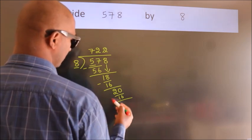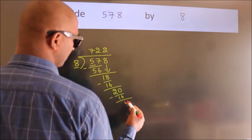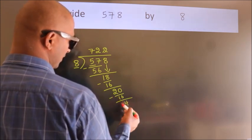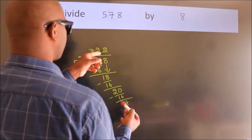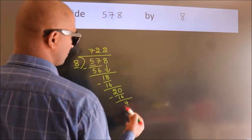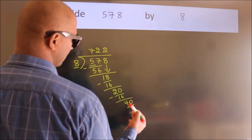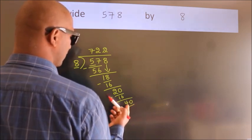Now we subtract. We get 4. After this, we already have the decimal. So directly take 0. So 40. When do we get 40 in 8 table?